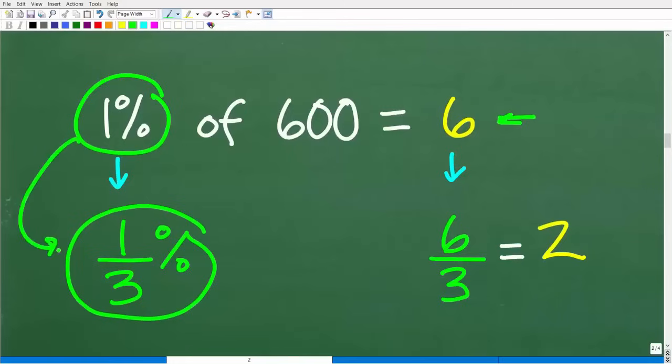So if I take the one and divide it by three, I end up with one-third. If I know that 1% of 600 is six, but I want one-third percent, I'm going to divide by three. So I'm going to divide our answer for 1% of 600, which is six, by three because I only want a third of that percent. So six divided by three, of course, is our answer, two.